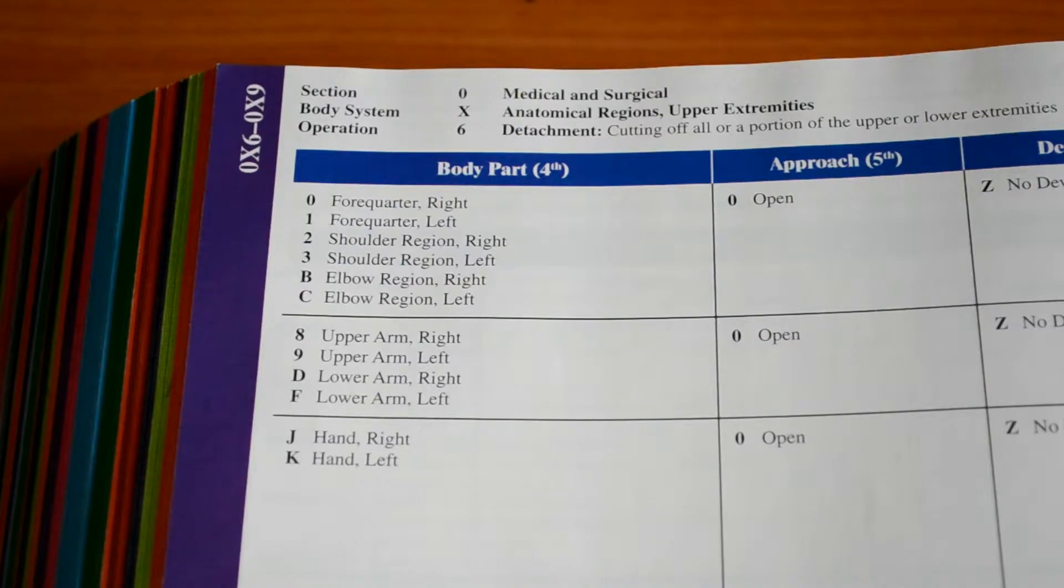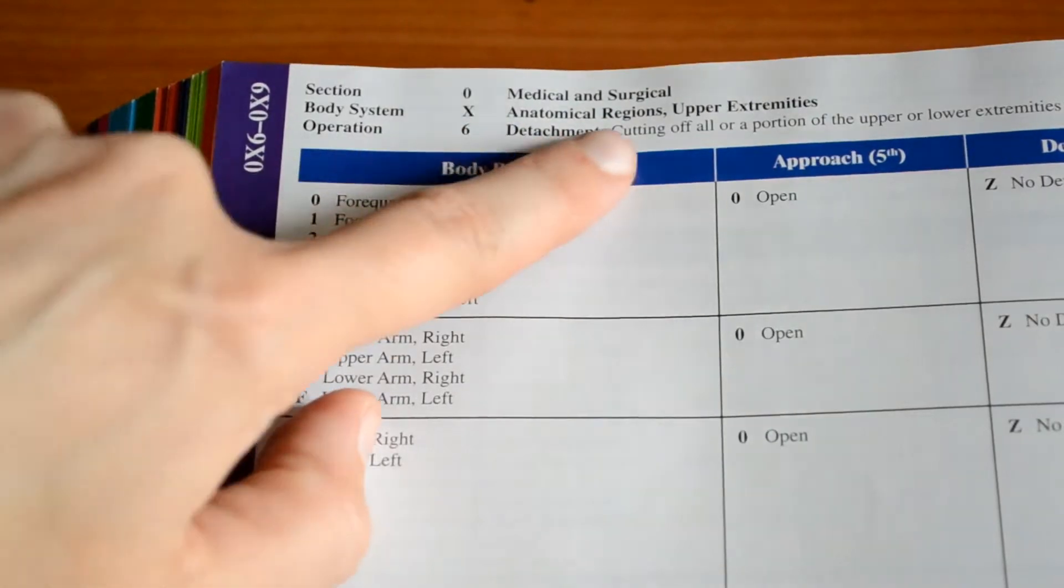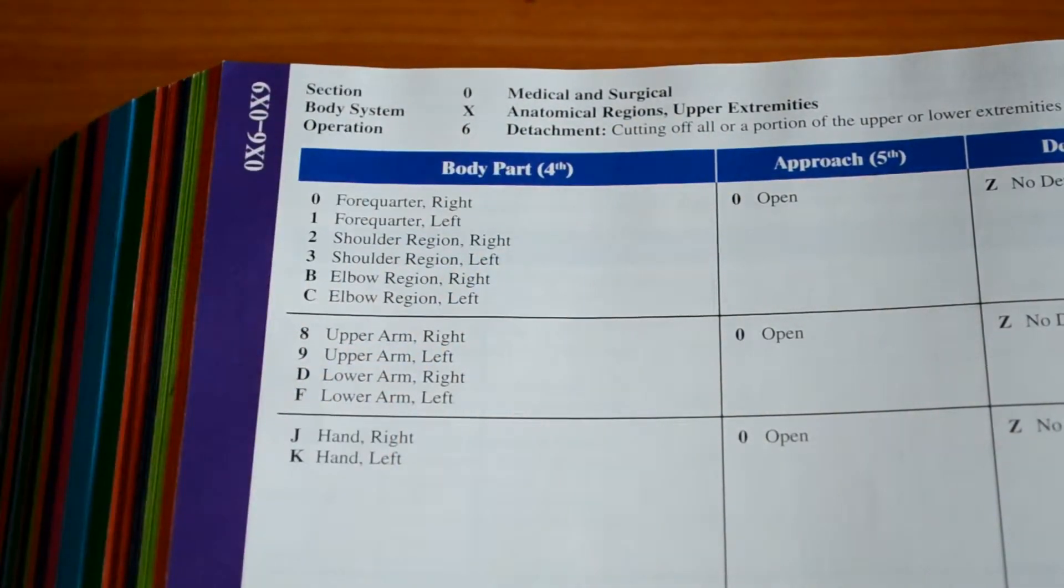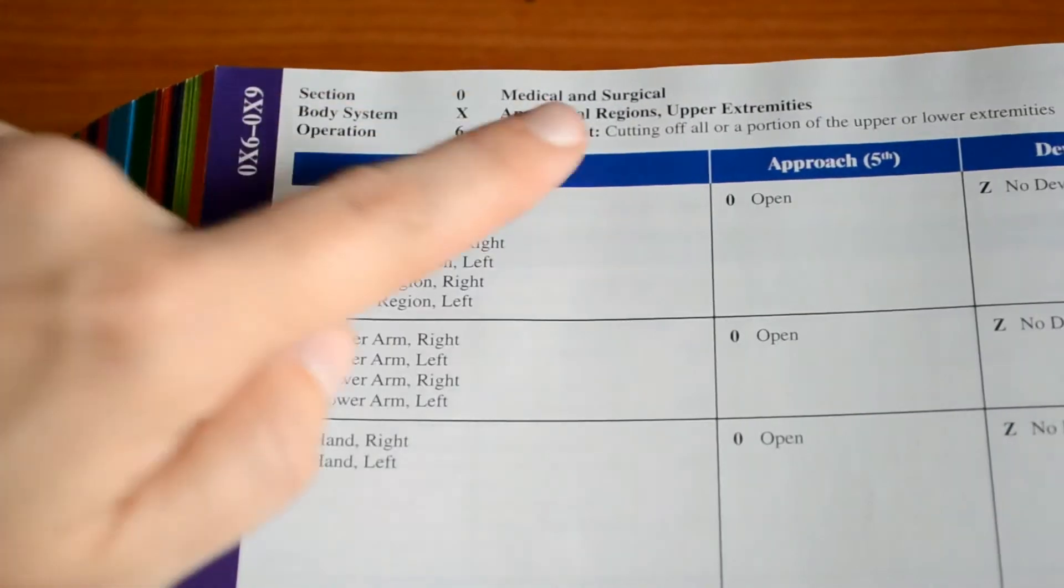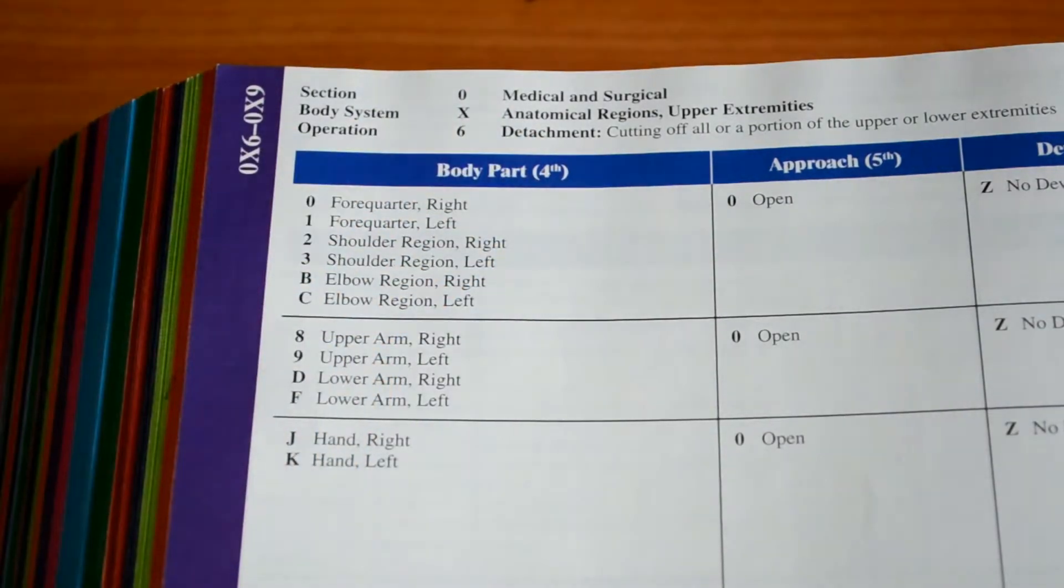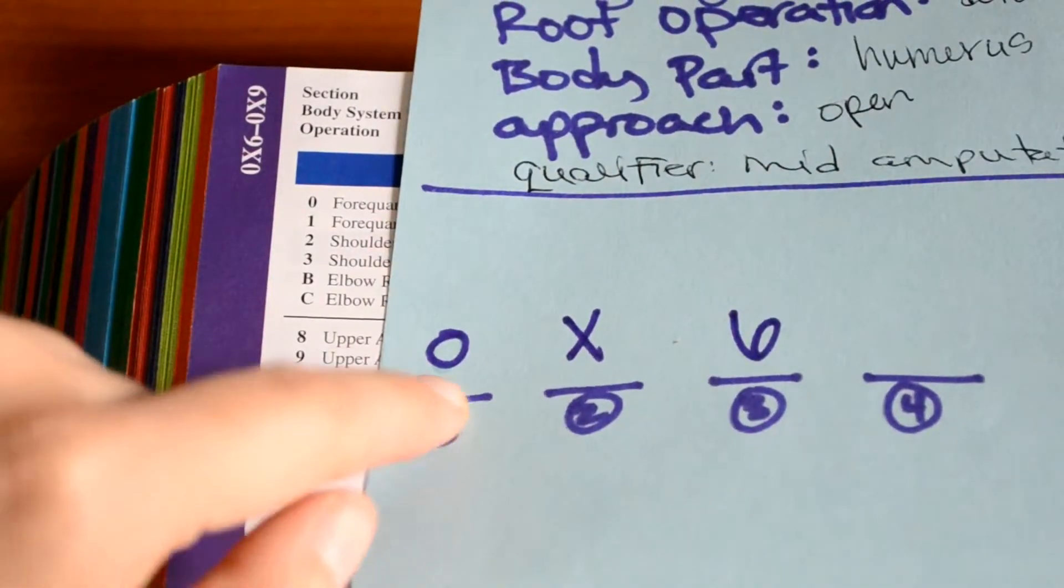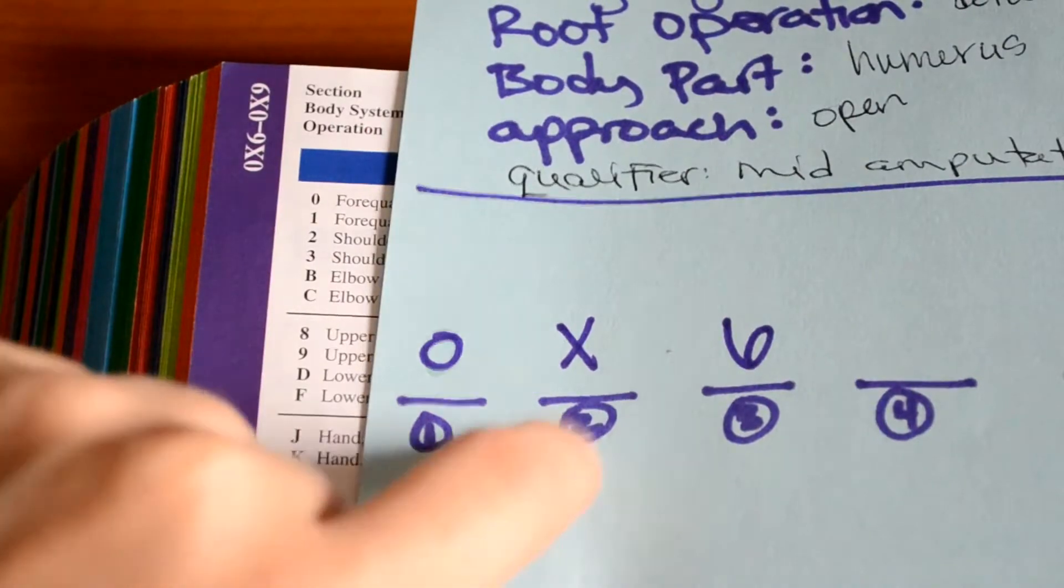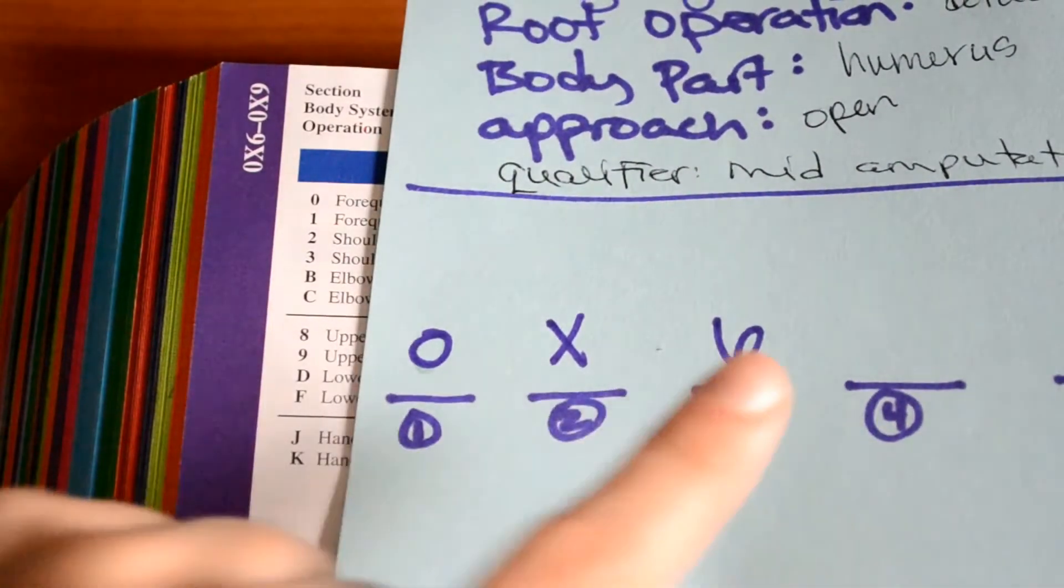And our section, medical surgical, that is an O. Our body system, anatomical regions, upper extremities, is an X. And the operation, detachment, is a 6. So we have O, medical and surgical, X, upper extremities, and 6, our root operation.